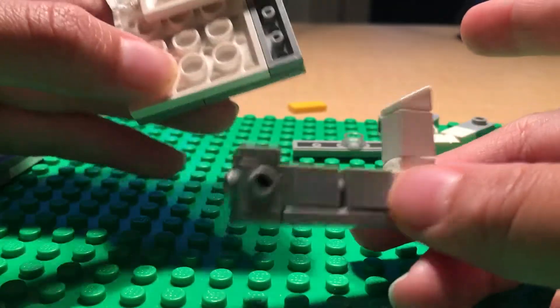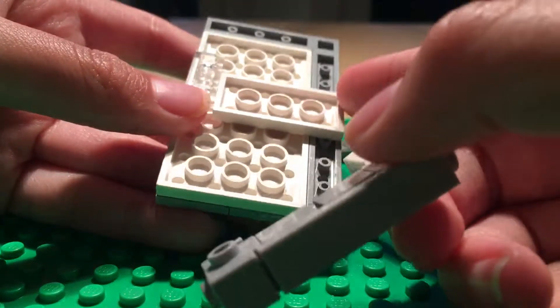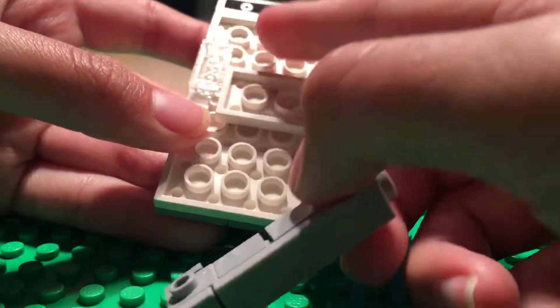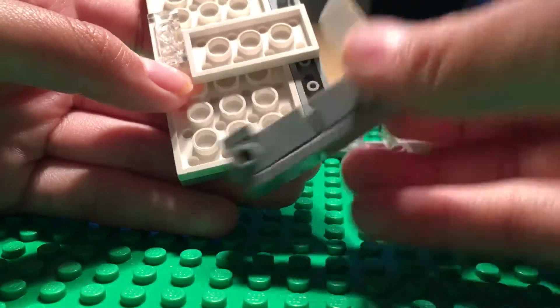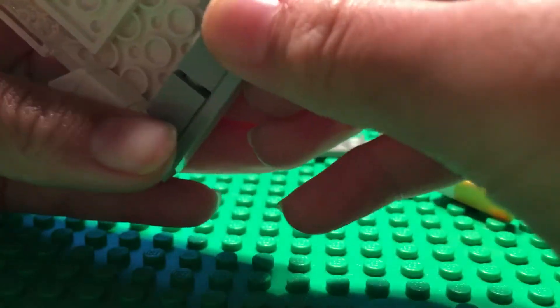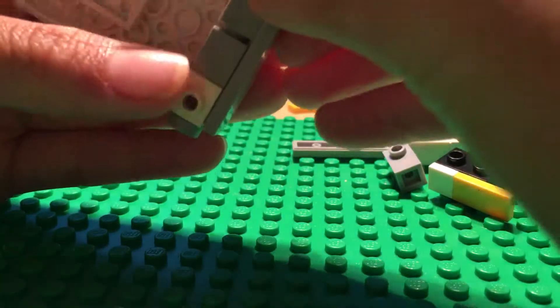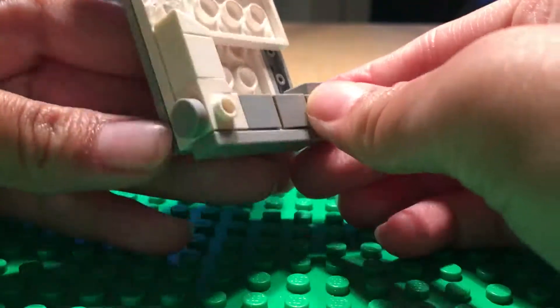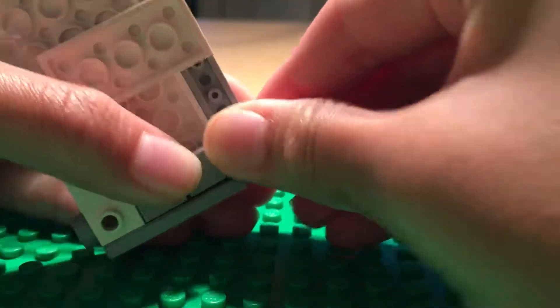First take this piece with the Travis brick and take the one that you put the two by four and the one by two on. Place it this way, just like that.